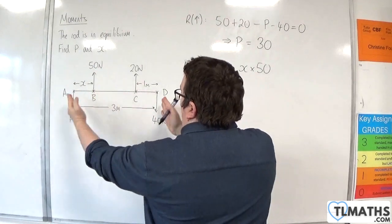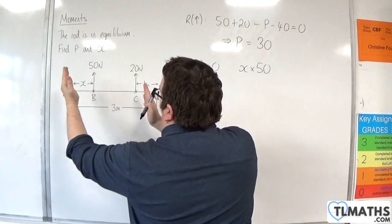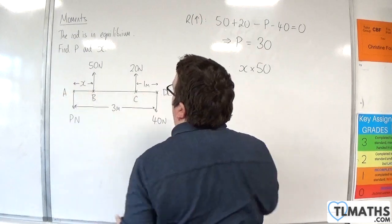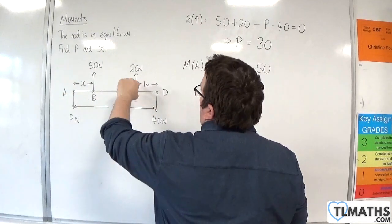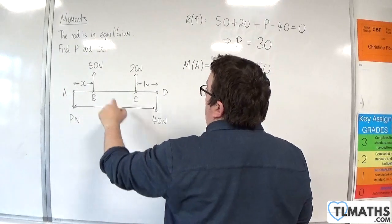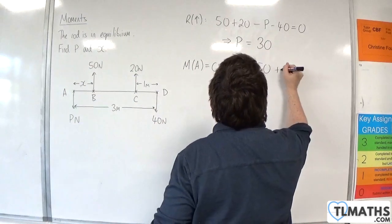The whole length of the rod is 3 metres, so we are 2 metres away from C. That's going around in an anti-clockwise motion as well, so that's 2 times 20, plus 2 times 20.